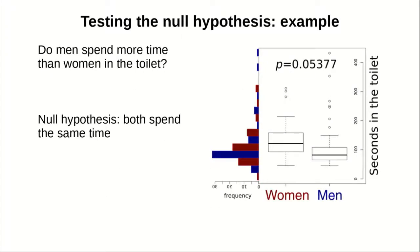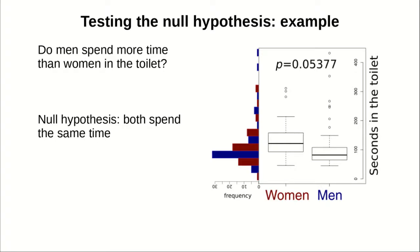For instance, do men spend more time than women in the toilet? In this case, the null hypothesis will be both spend the same time. We observe some differences in the box plot. We observe some difference in the histogram. We do a test. We compute a p-value and the p-value is 0.05377. So in that case, given the sample, we cannot reject the null hypothesis.